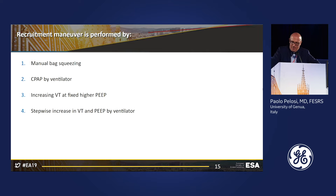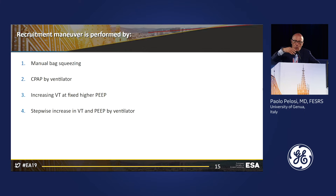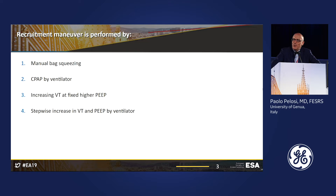Last question before we discuss in more detail: how do you perform a recruitment maneuver? Since you said you perform a recruitment maneuver and then increase PEEP, I want to know what you do in real clinical practice. Options: manual bag squeezing, CPAP by ventilator, increase tidal volume with fixed higher PEEP, or a stepwise increase in tidal volume and PEEP set by the ventilator. Please vote.